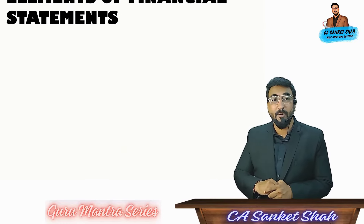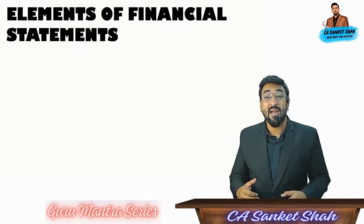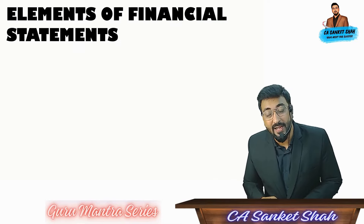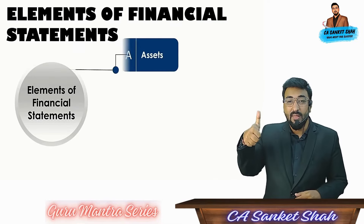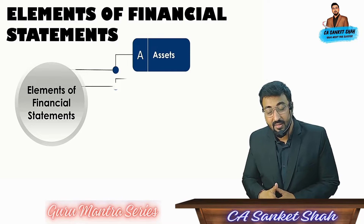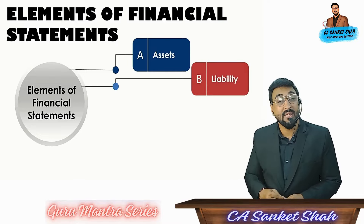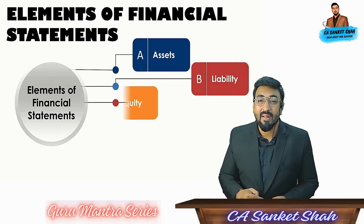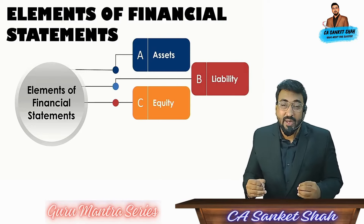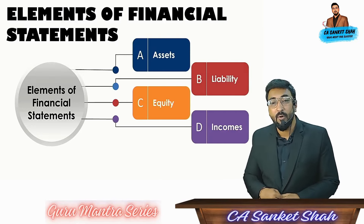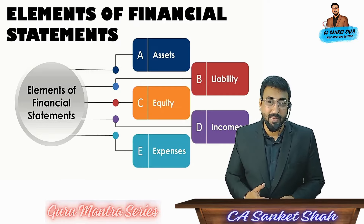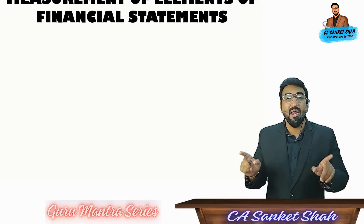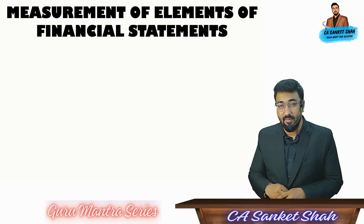Now friends, let's understand elements of financial statements, which are divided in five parts. Number one is an asset. Number two is liability. Number three is equity. Number four: income. And number five: expenses. So these are elements of financial statements.